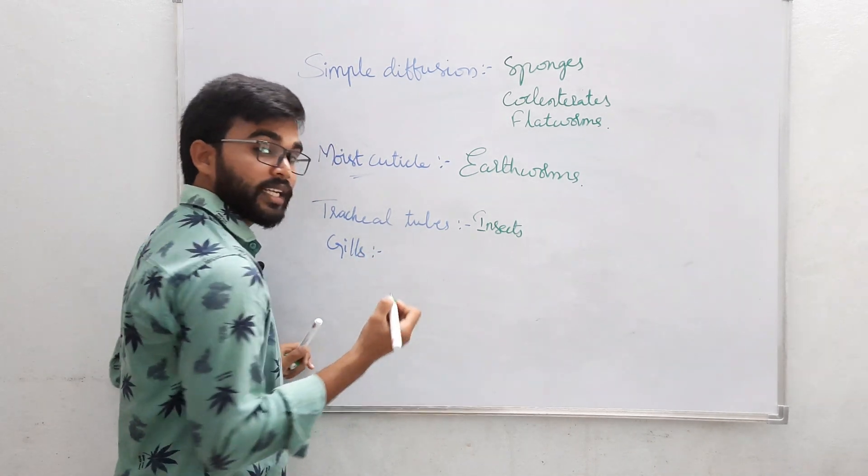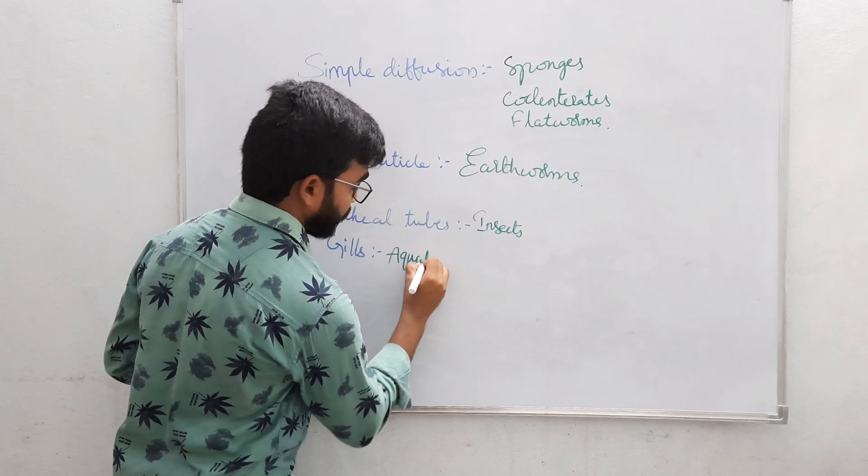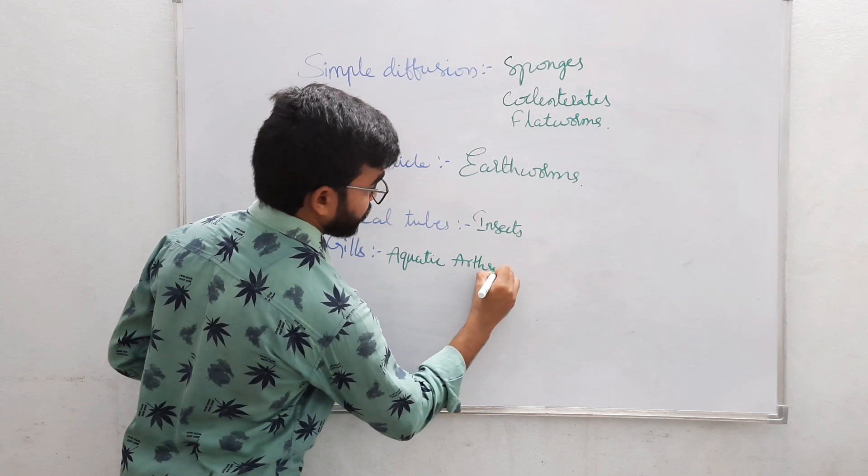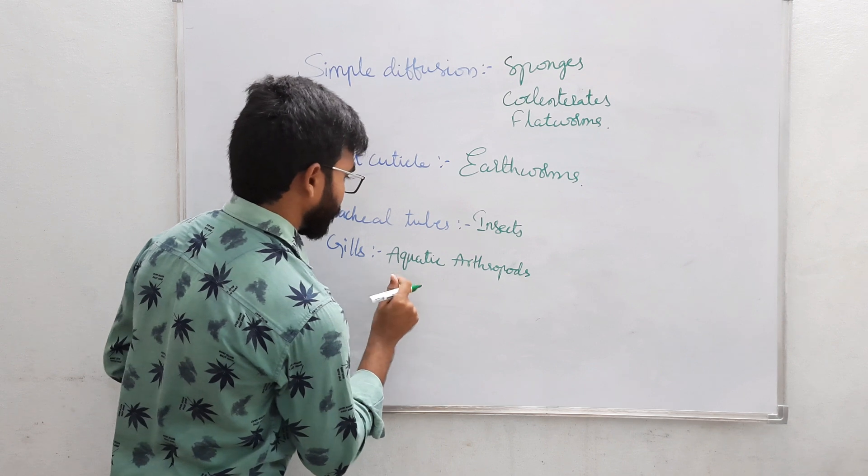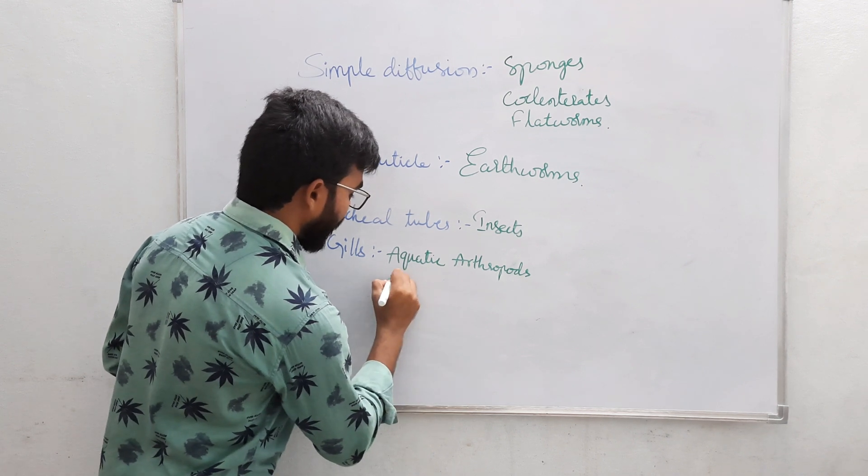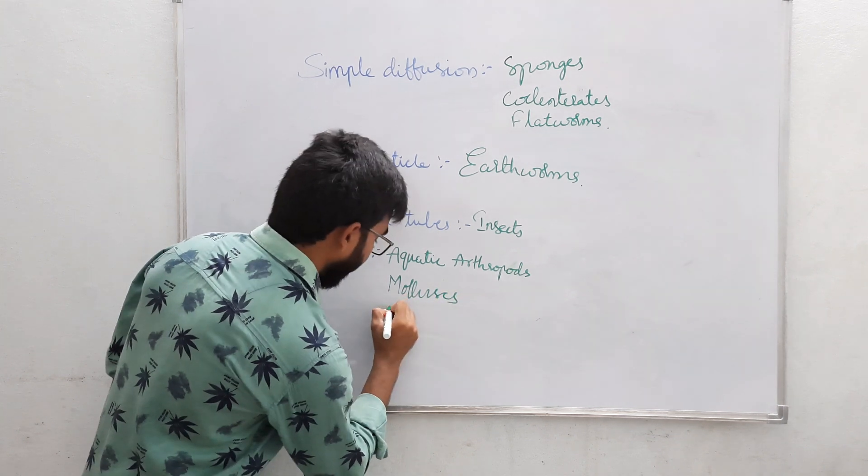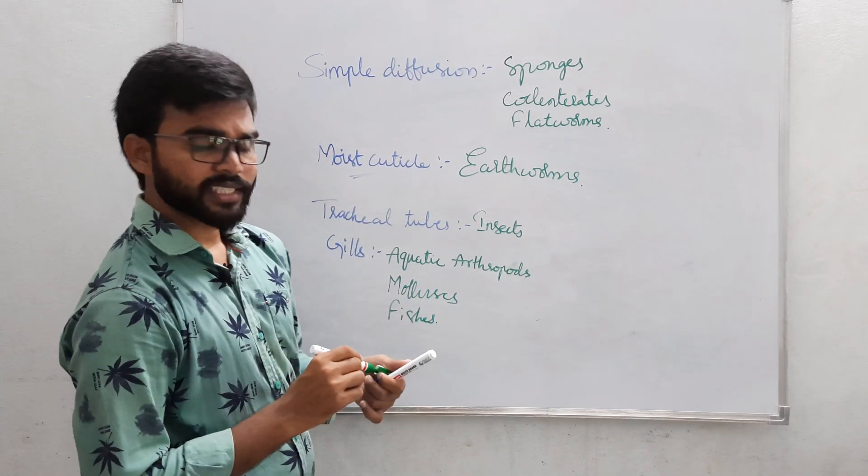Next type is gills in aquatic arthropods, molluscs, and fishes.